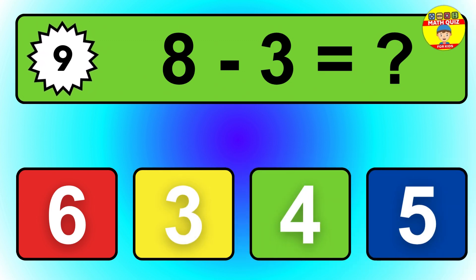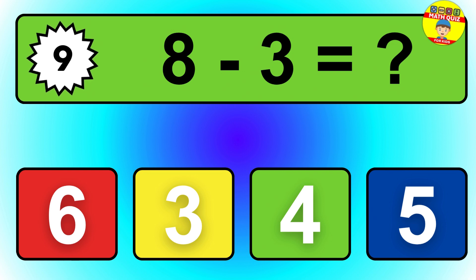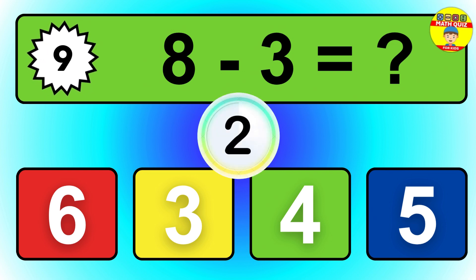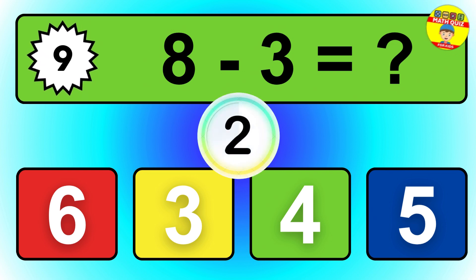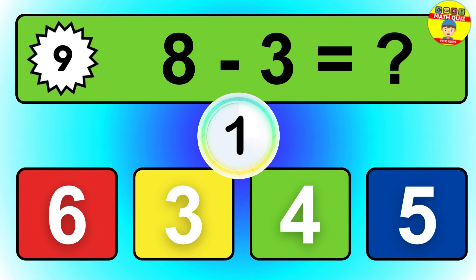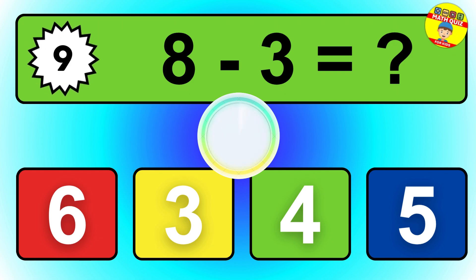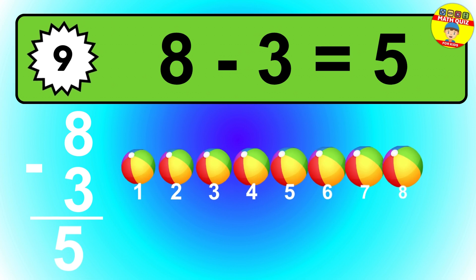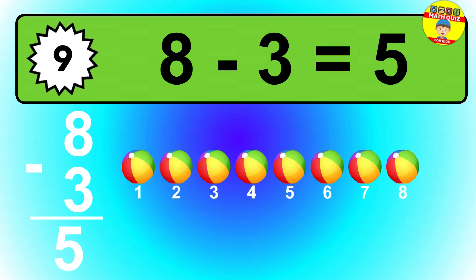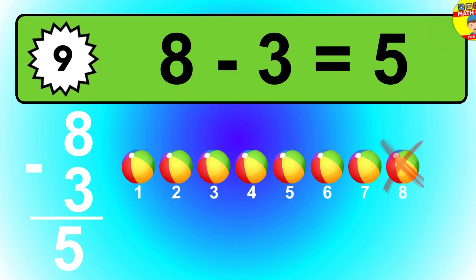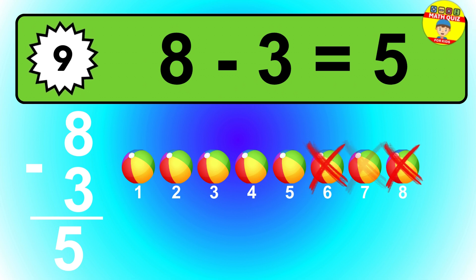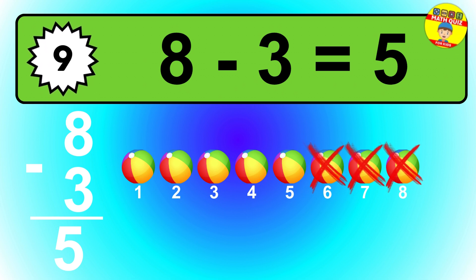Question 9. 8 minus 3 equals what? So the answer is 8 minus 3 is 5. Let's count it: 1, 2, 3, 4, 5.